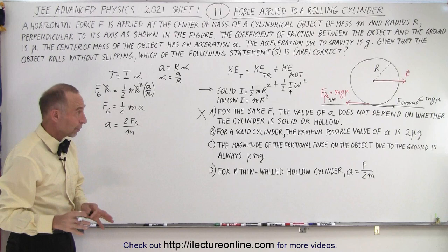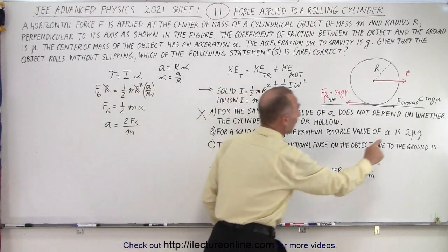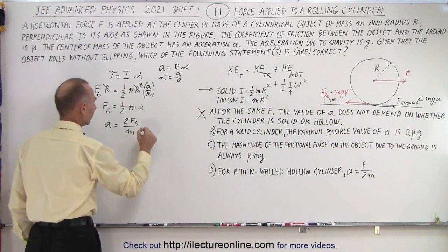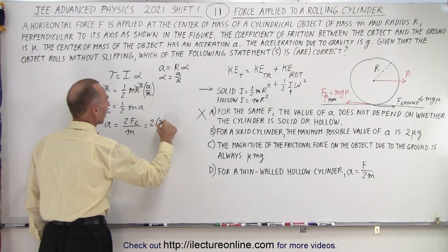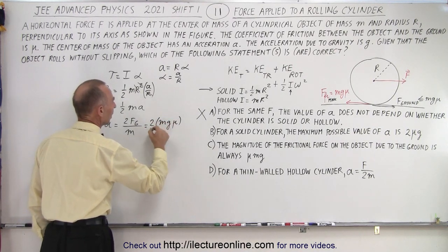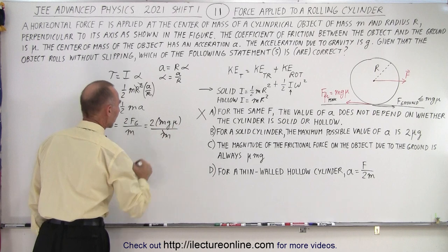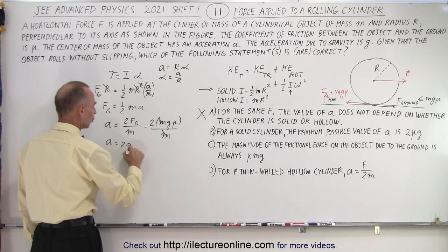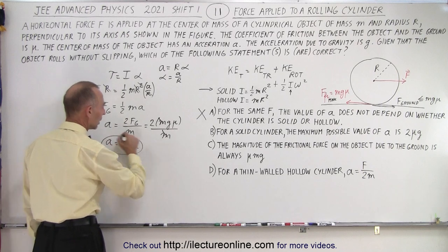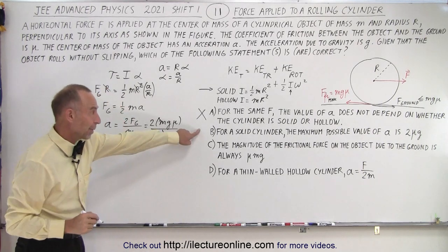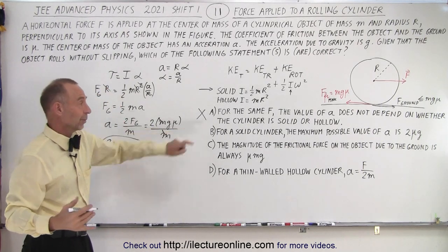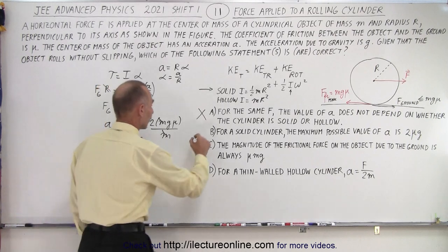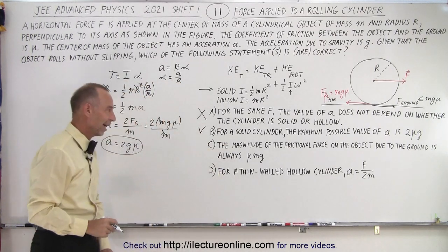Now the force on the ground, of course, the maximum force we can have is mg mu. So let's plug that in there. So this is equal to two times mg mu divided by M. So when the m's cancel, we can then see that the maximum acceleration is going to be 2g times mu. And I believe that's what we have for B. The maximum possible value for acceleration is 2 mu g. So therefore B is a correct answer.